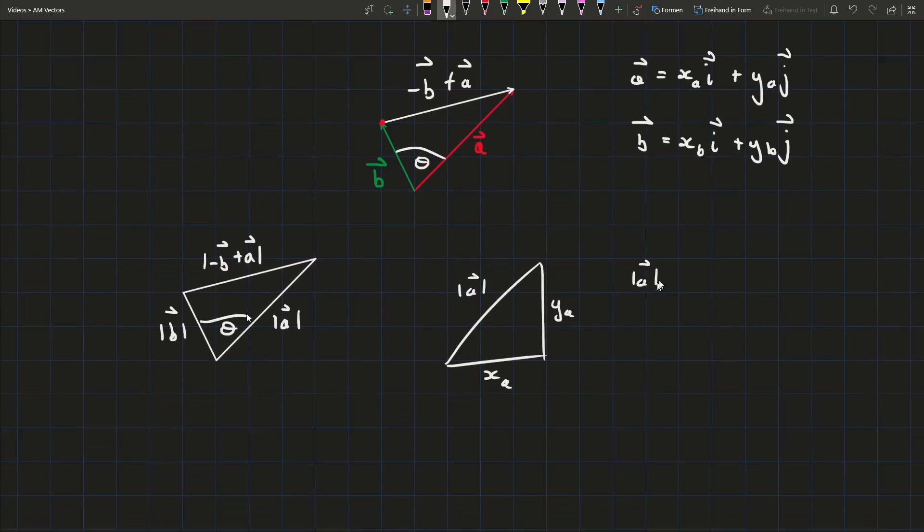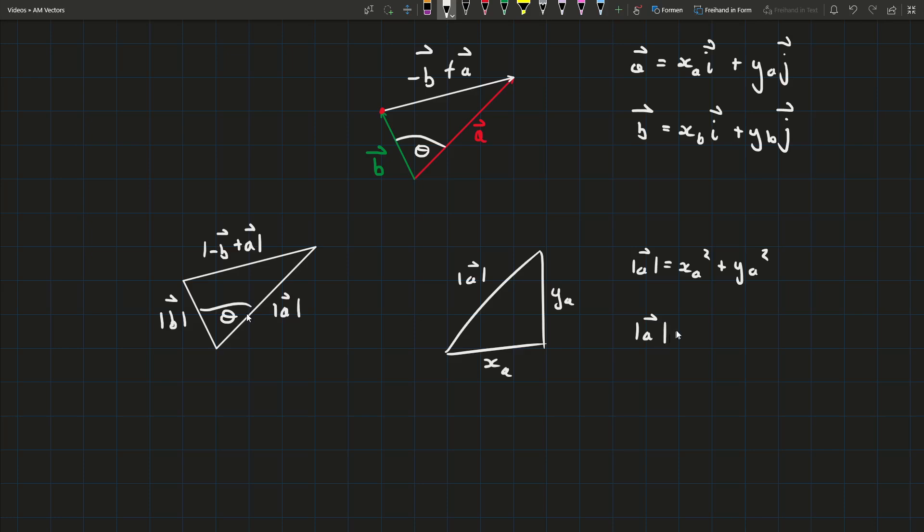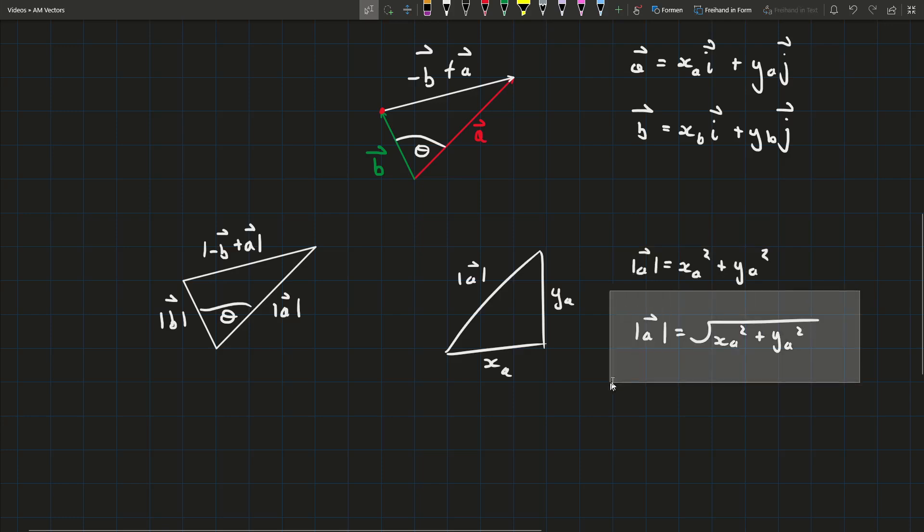Which means that the magnitude of vector a is the square root of the x component squared plus the y component squared and it's the same for every vector so I'm going to do the exact same thing now for the other two.